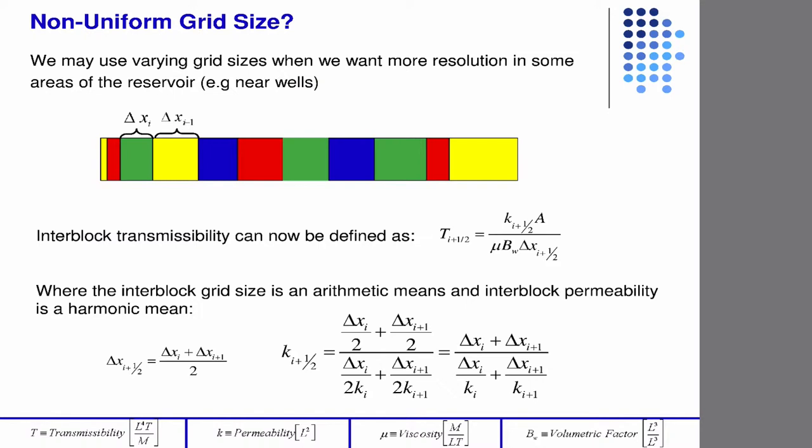So remember that in these grid blocks, the pressure is constant. So if you have a gigantic grid block, like, for instance, if you had an entire reservoir and it was one grid block, you'd have one pressure in the entire grid block. So to get variations in pressure, you need smaller grid blocks. To get steep variations in pressure, you need really small grid blocks.